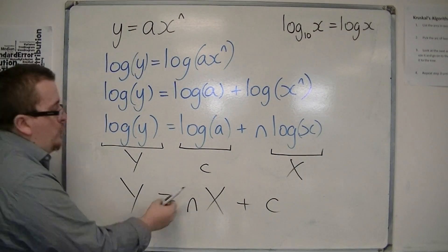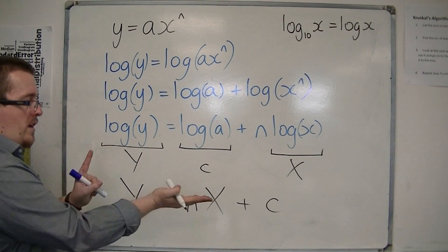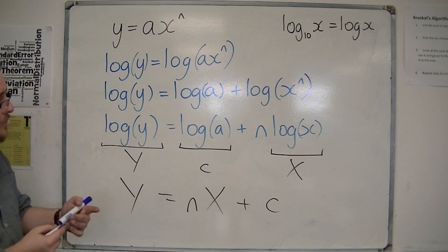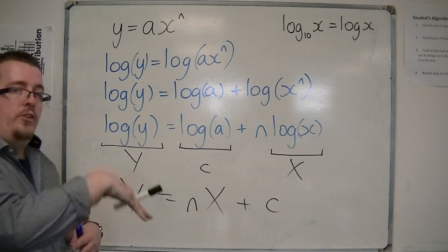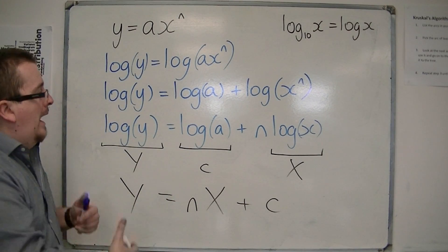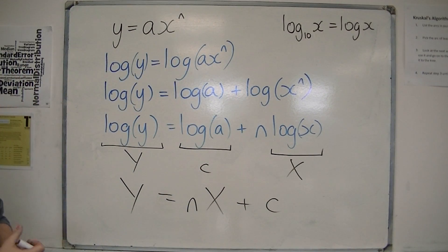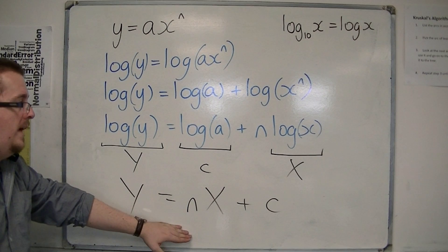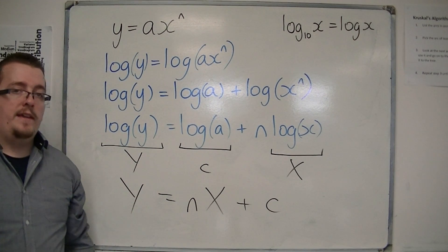And I've now reduced it to a linear law, because if I plot capital X against capital Y on the graph, it will give me a straight-line equation. And so I can use the straight-line equation to estimate values, and then be able to bring them back into the previous format using this method. So this is something you really should be able to do and follow through as part of the exam. And I'll show you an example of how we use this in the next video.